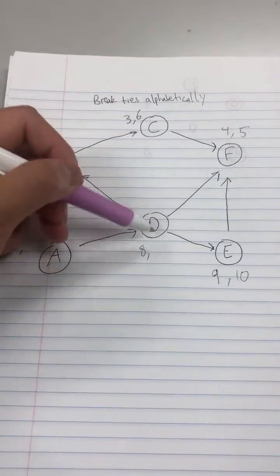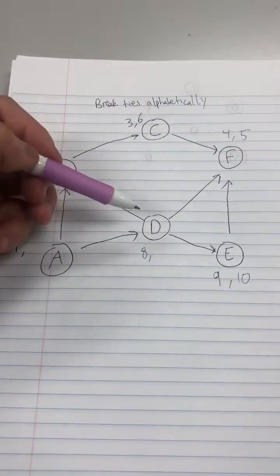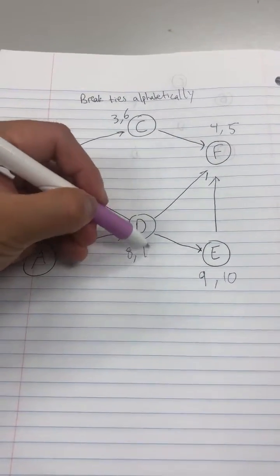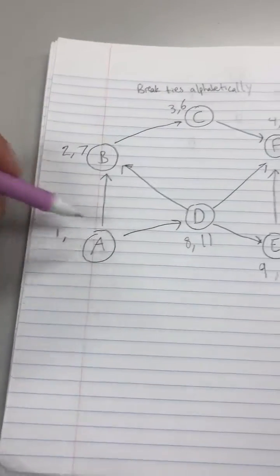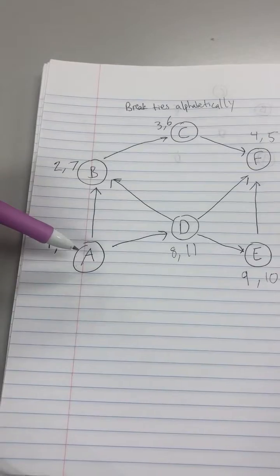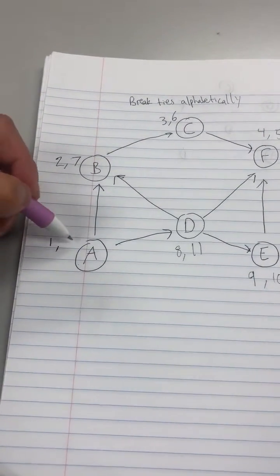Go back. D, no more children that haven't been visited, so this would be closed at eleven. And finally we come back to A. All A's children are visited, so it's twelve.